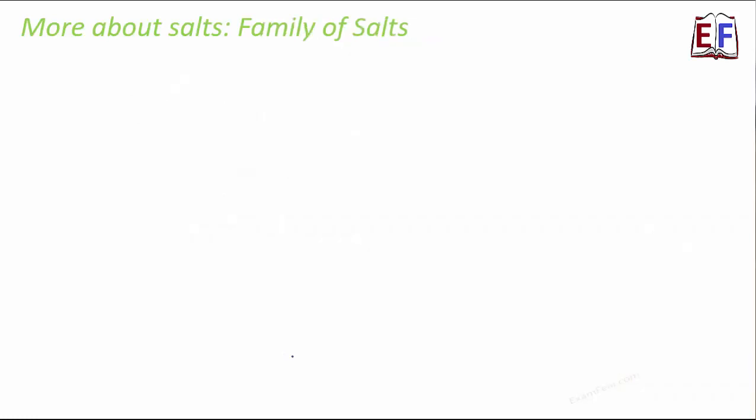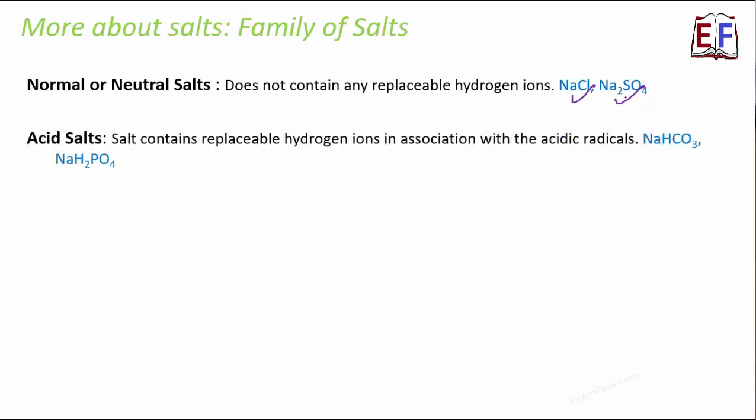Since there are so many different types of salts, let's talk about the family of salts. We have categorized them into different types. First is normal or neutral salts. They do not contain any replaceable hydrogen ions, so that's why they are neutral. For example, NaCl like common salt and Na2SO4. There are acid salts. Whenever the word acid comes, that means they have excess of H plus ions. They have replaceable hydrogen ions in association with the acidic radicals. For example, NaHCO3, NaH2PO4. The presence of this hydrogen ion tells us that they are acid salts.